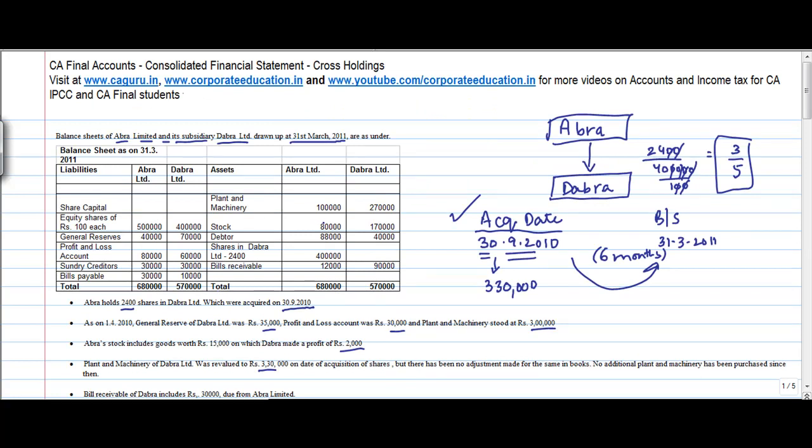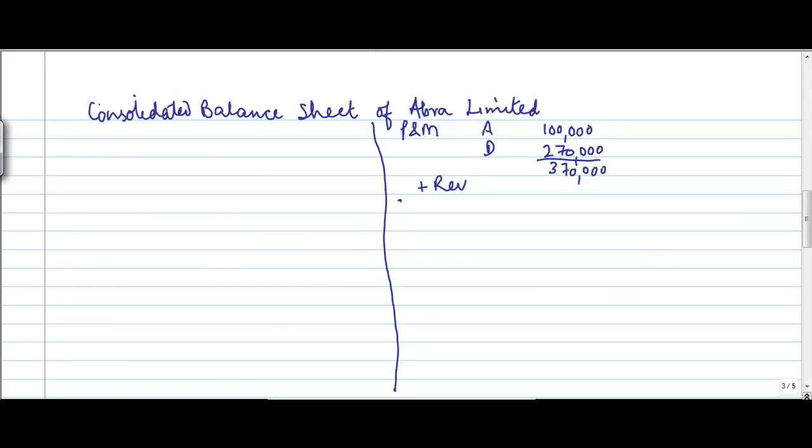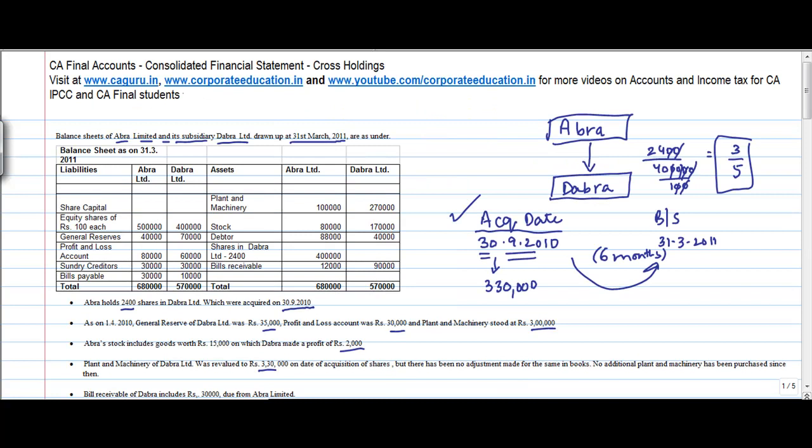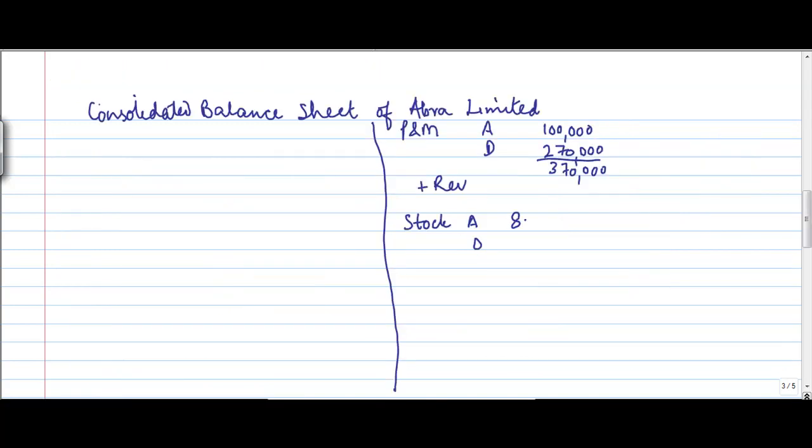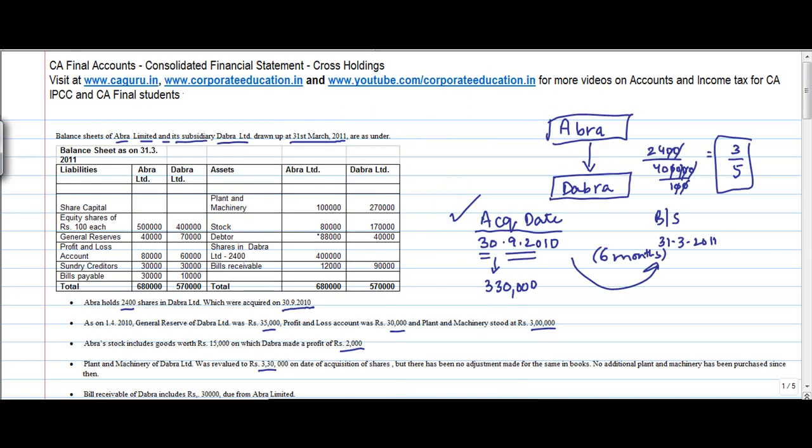Stock. Now stock basically includes 80,000 for Abra and 1,70,000 for Dabra. Okay, let me move to stock. Or should we leave a line here? I guess yes. Stock, Abra, Dabra. 80,000 and 1,70,000. Okay, there are some adjustments that we will come back to afterwards.